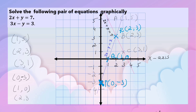This line represents the equation 3x minus y is equal to 3. You can see that these two lines intersect at the point 2 comma 3. Since the lines intersect at the point 2 comma 3, x is equal to 2 and y is equal to 3. Therefore, x is equal to 2 and y is equal to 3.